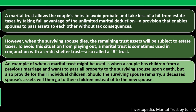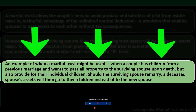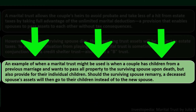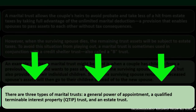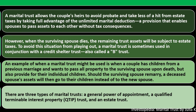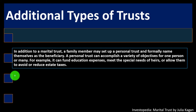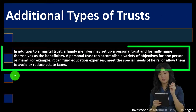An example of when a marital trust might be used: when a couple has children from a previous marriage and wants to pass all property to the surviving spouse upon death, but also provide for their individual children. Should the surviving spouse remarry, the deceased spouse's assets would go to their children instead of the new spouse. There are three types of marital trusts: the general power of appointment, the qualified terminable interest property (QTIP or Q-Tip) trust, and an estate trust.